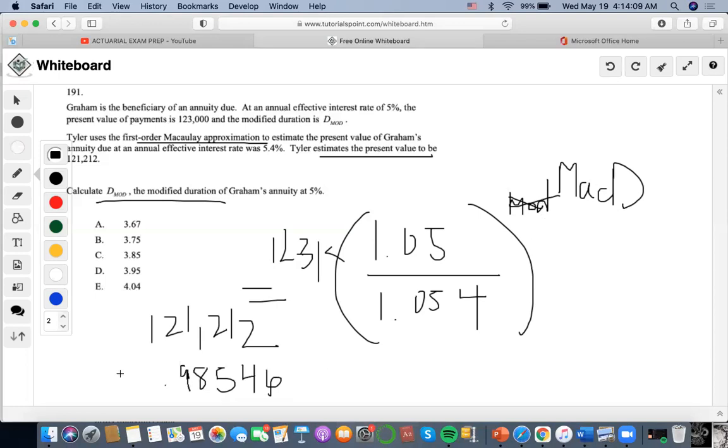And then I'm going to do logarithms. So I'm going to do ln this equals MACD ln this whole thing, right? Now, I'm going to solve. So I'm going to do ln 0.98546, right? Divided by ln 1.05 divided by 1.054.